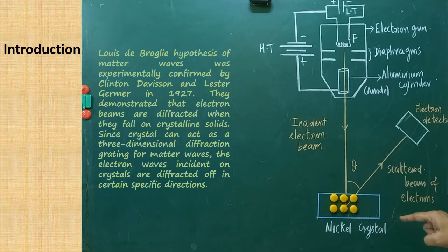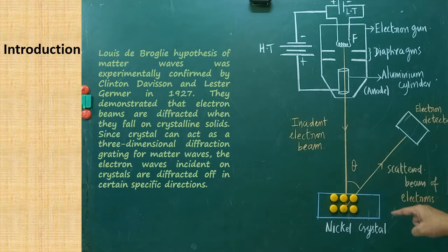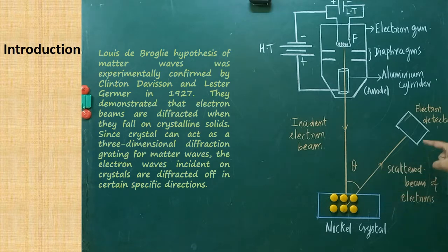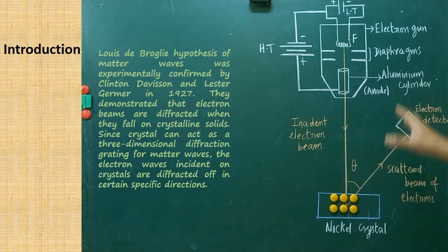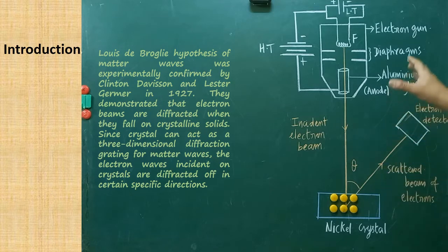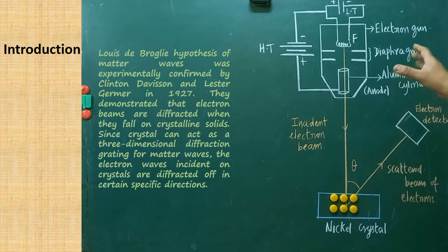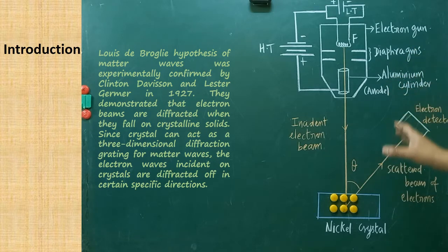The electron waves incident on the crystals are diffracted in certain specific directions. This picture shows the schematic representation of the apparatus for the experiment.